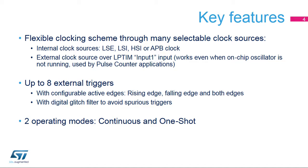The external clock source feature is used for building pulse counter applications and is a key function for metering applications like gas meters. The low-power timer features up to 8 external trigger sources with configurable polarity. External trigger inputs feature digital filters to cancel out faulty triggers that could be raised in noisy operating environments.